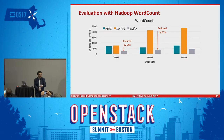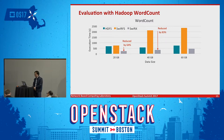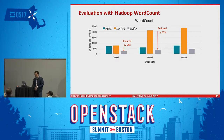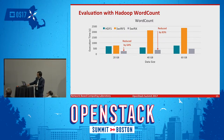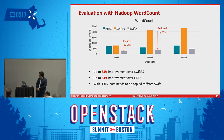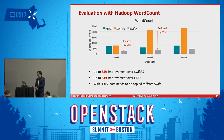We also want to run big data workloads on top of Swift. We compared three configurations: first, Hadoop WordCount on HDFS; second, SwiftFS, which runs HDFS workloads on top of default Swift; and third, our proposed Swift-X — Swift with RDMA and proxy server bypass. Compared with SwiftFS, we can achieve up to 83% improvement for Hadoop workloads. Compared with HDFS, we can achieve around 70% improvement, noting that HDFS requires copying data in and out of Swift.